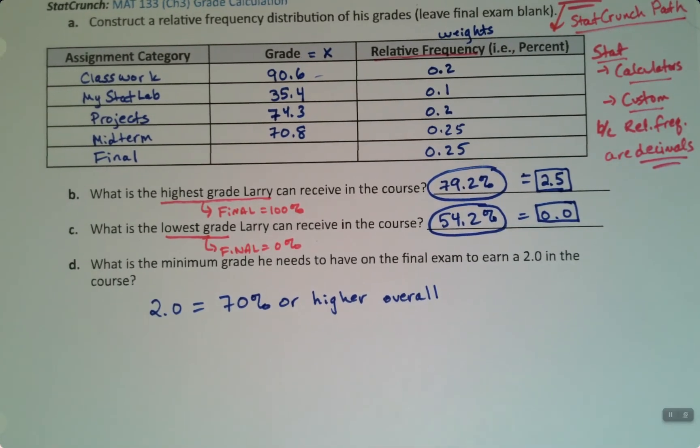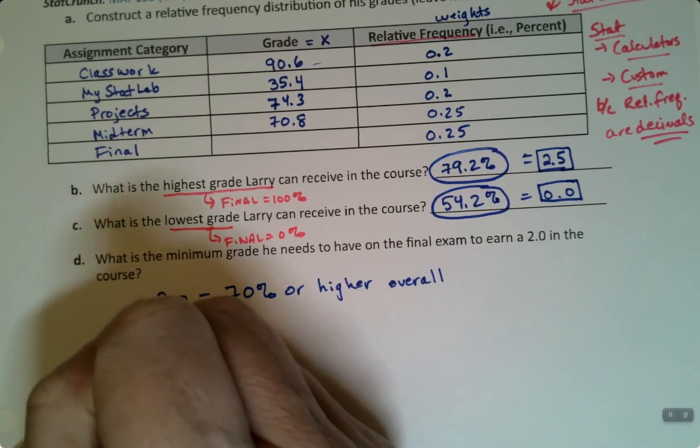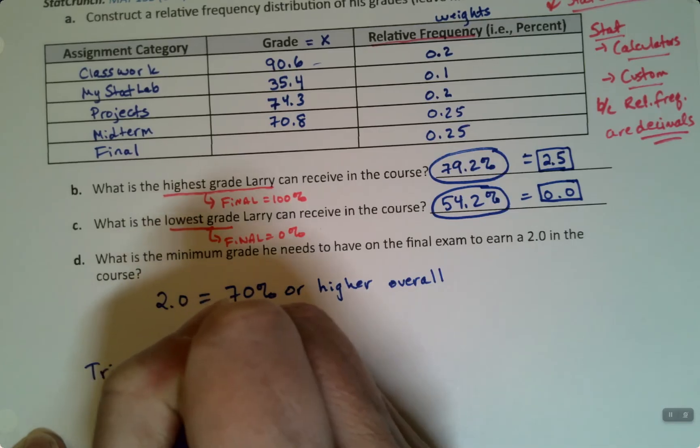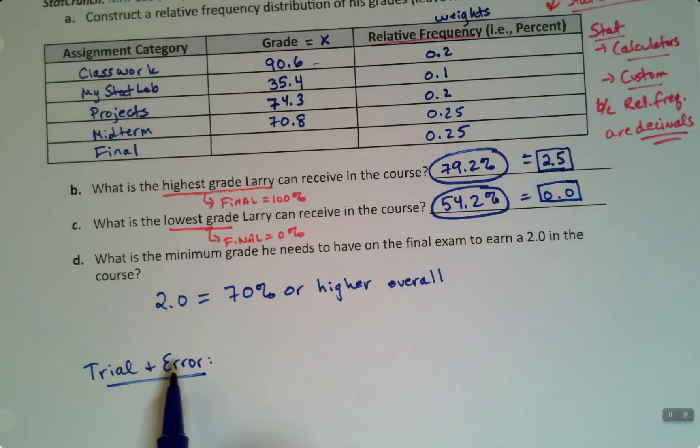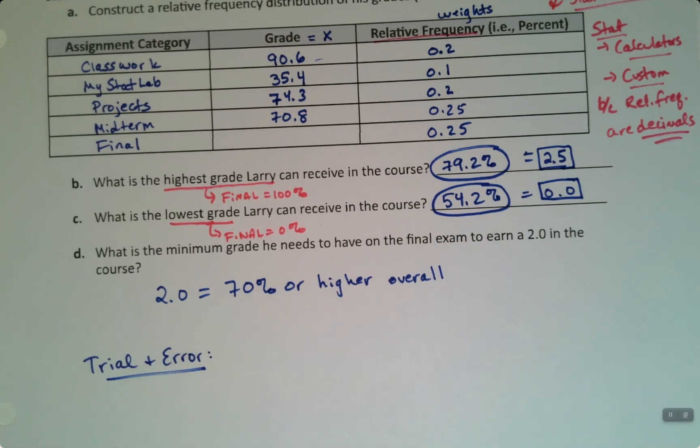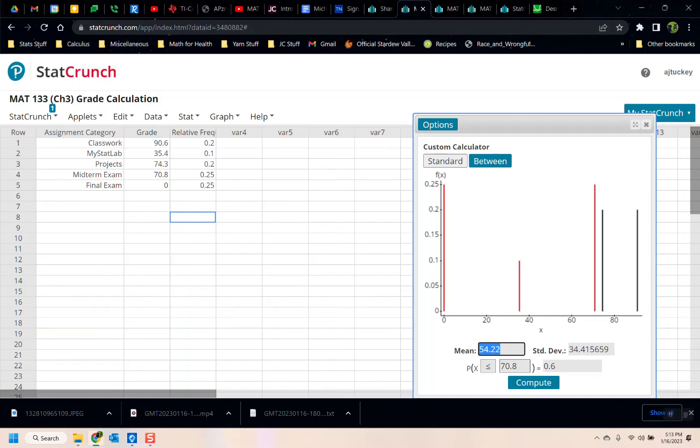But we can just trial and error. Let's try trial and error. What that means in mathematics is you try different numbers, and you get errors, and then you correct yourself until you get the right number. Simple as that. What we're going to do is we're just going to go back to StatCrunch, and we're going to try a bunch of numbers.